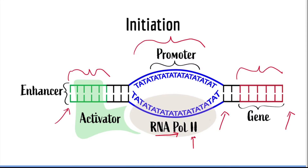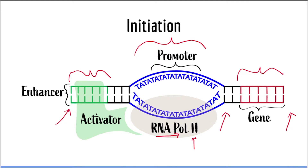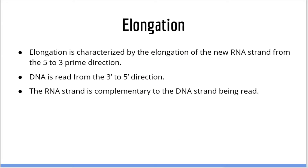I also want to remind you to never confuse DNA polymerases with RNA polymerases. Prokaryotes have three types of DNA polymerase labeled DNA polymerase 1 through 3. Do not confuse prokaryotic DNA polymerases with eukaryotic RNA polymerases. Prokaryotes have three types of DNA polymerase and only one type of RNA polymerase. Eukaryotes, on the other hand, have over 20 different types of DNA polymerases and three types of RNA polymerases. You are only expected to know the eukaryotic RNA polymerases and the prokaryotic DNA polymerases as well as RNA polymerase. So with that said, let's move on to elongation.